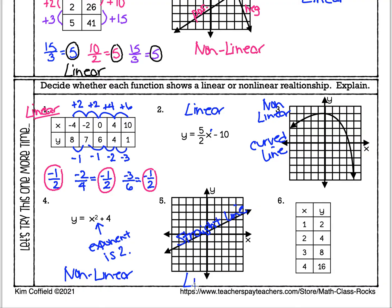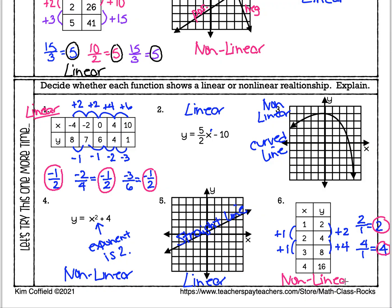Number six is another table. From 2 to 4 we're adding 2 in Y, and from 1 to 2 we're adding 1 in X, so the rate of change is 2 over 1, which equals 2. Checking the next interval: plus 4 in Y and plus 1 in X gives 4 over 1, which equals 4. These are different — 2 does not equal 4 — so these are definitely not the same rate of change. This is nonlinear.